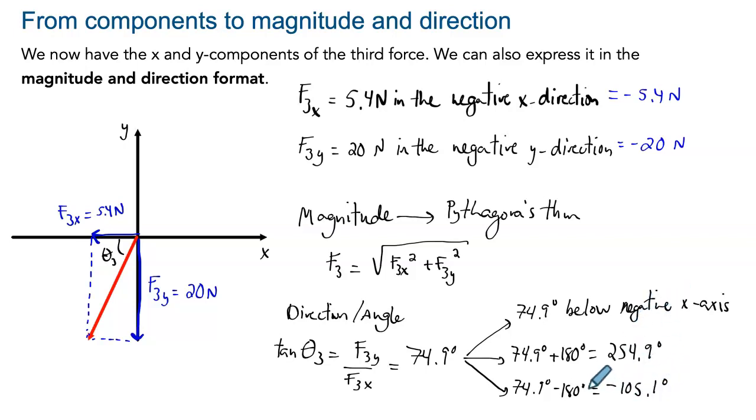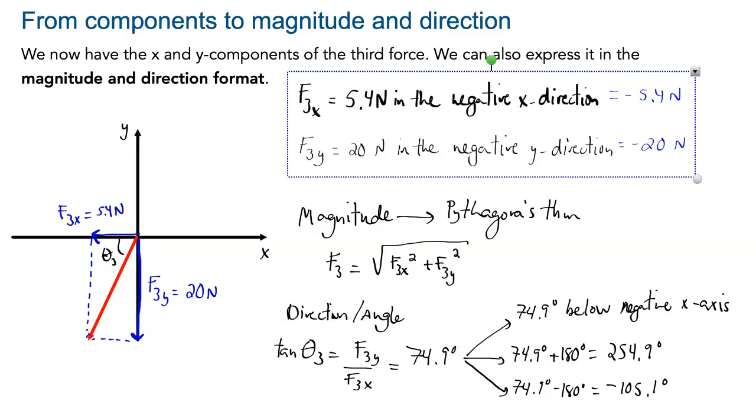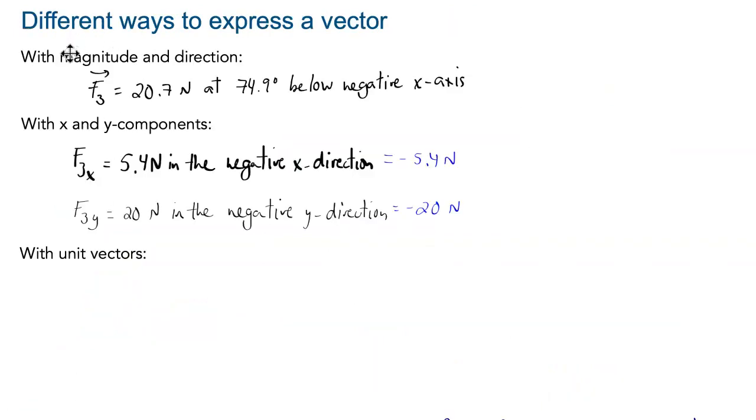So all three methods are totally okay to describe your vector. So to summarize, we can express the vector by using magnitude and direction. So here, 20.7 newtons at 74.9 degrees below the negative x-axis. This being the result of the calculation on the previous page, we can express it also with x and y components, F3x, F3y.